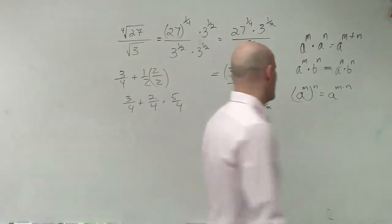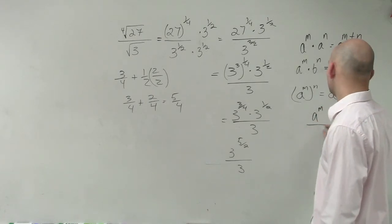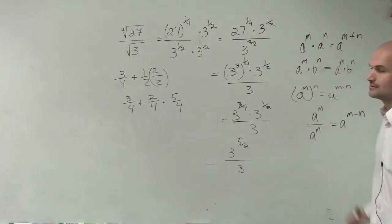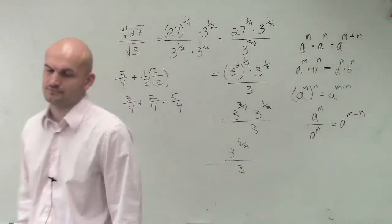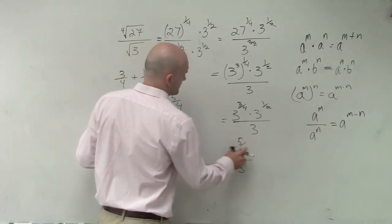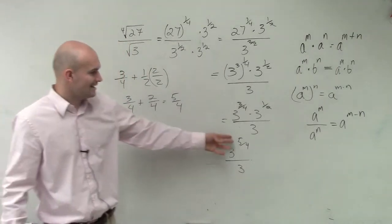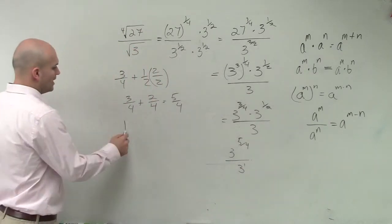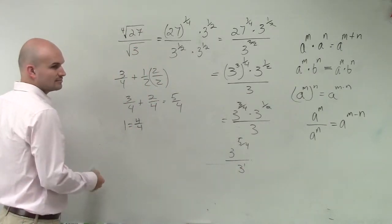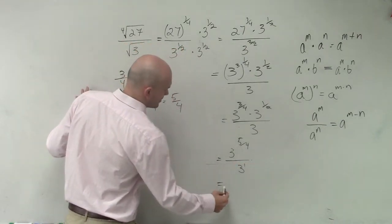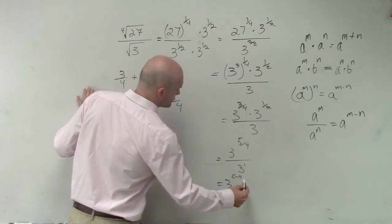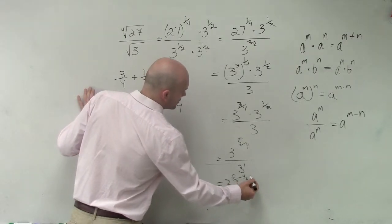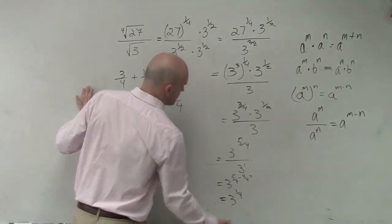Now, let's have a little more fun. Now, a to the m divided by a to the n, what do we do with our exponents? Subtract. Wait. Well, 1 is equal to 4 over 4, right? Yes? So therefore, my final answer is 3 to the 5 over 4 minus 4 over 4, which equals 3 to the 1 4th power.